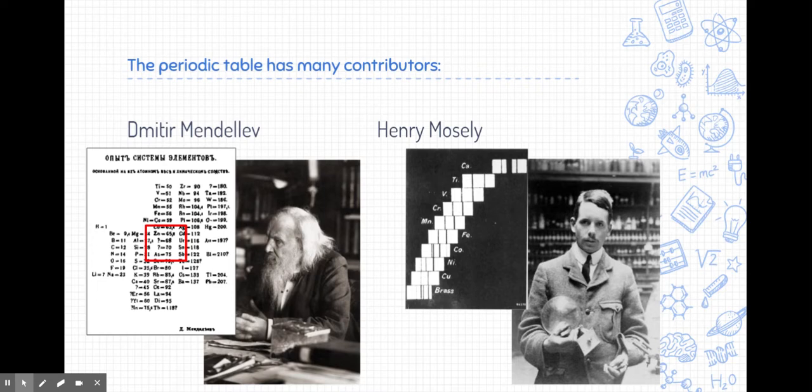His periodic table was really neat because he left gaps as predictions for yet-to-be-discovered elements that eventually turned out to be true. Henry Moseley updated the periodic table from atomic mass to atomic number based on his study of the emission spectra of different elements.